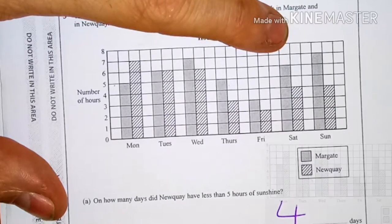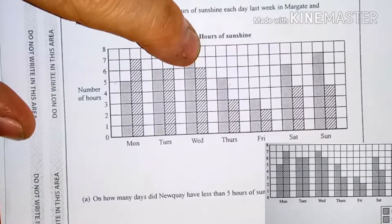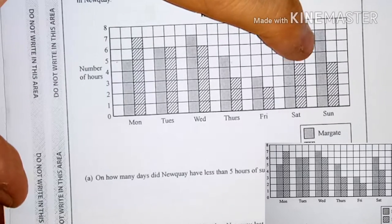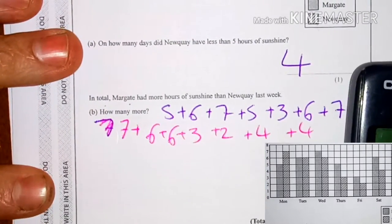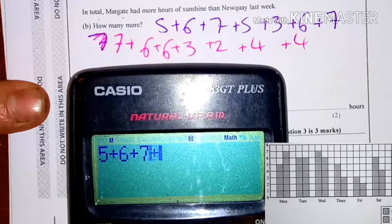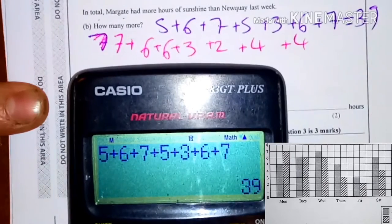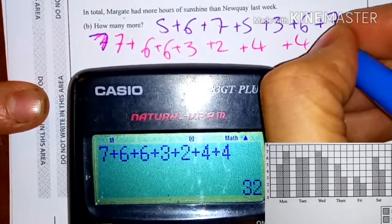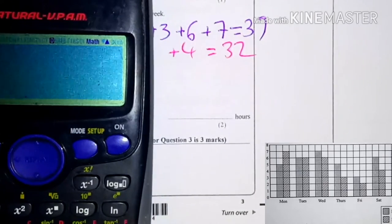Now for Newquay, using a different pen: seven plus six plus six plus three plus two plus four plus four. This is a calculator paper, so I'm just going to use my calculator to add all these up. Margate: five plus six plus seven plus five plus three plus six plus seven equals 39. Newquay: seven plus six plus six plus three plus two plus four plus four equals 32. Now it asks how many more, so we do 39 minus 32, which equals seven.